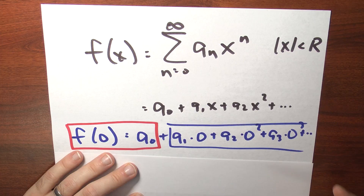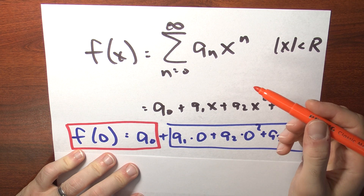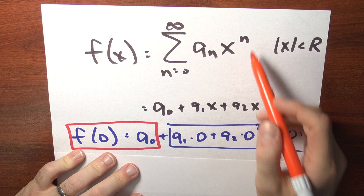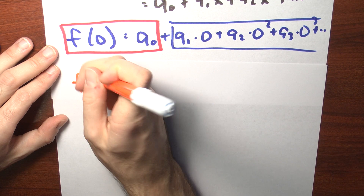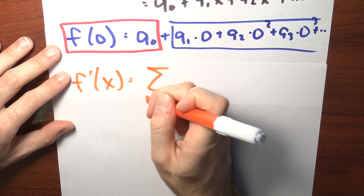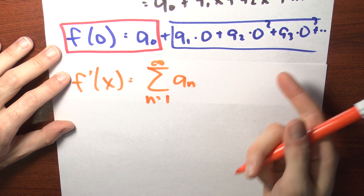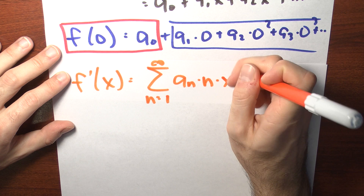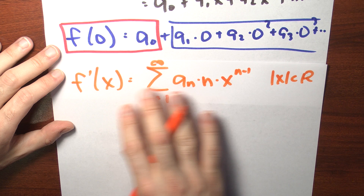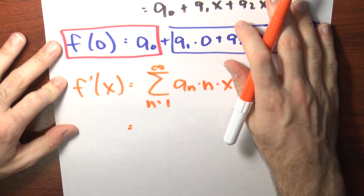There's more. The next coefficient, a sub 1, can be calculated in terms of the derivative of f. I can differentiate this power series term by term, and I've got a power series for the derivative of f, at least valid on this interval. So the derivative of f at x is given by the sum n goes from 1 to infinity of a sub n times n times x to the n minus 1, valid when the absolute value of x is less than r. Let me write out the first few terms of this power series.